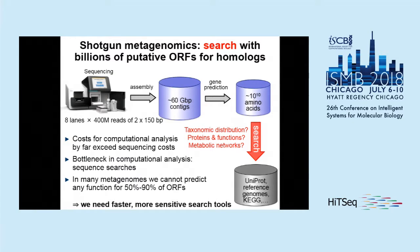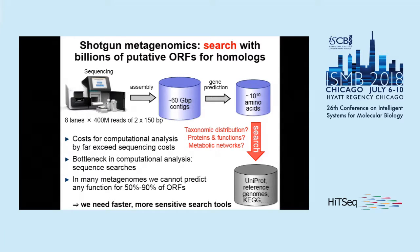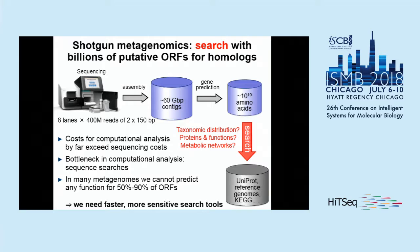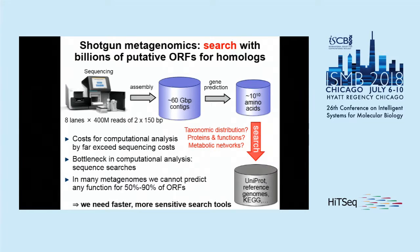We have this problem in metagenomics. We start with a sequencer, produce gigabytes or even terabytes of read data. Then maybe we run some assembly, ending up with gigabytes of contigs. We do some gene predictions and end up with a lot of amino acids, which we then want to search against huge databases like UniProt or KEGG. The problem is that the cost of computation actually outpaces the sequencing cost. Also, a lot of these ORFs cannot be mapped to a function — in some metagenomes, up to 50% to 90% cannot be mapped. So there's a need for fast and sensitive search tools.